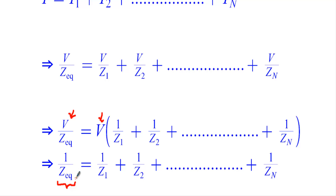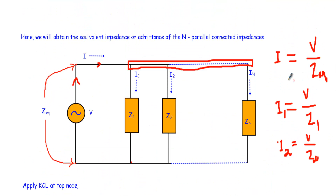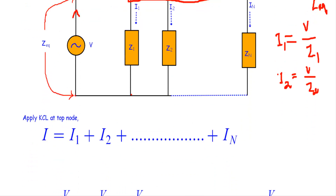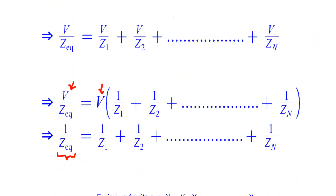Z equivalent is the total impedance of the circuit. This indicates that the reciprocal of the equivalent impedance equals the algebraic sum of the reciprocals of the individual impedances when they are connected in parallel. Using the formula 1 / Z equivalent = 1 / Z1 + 1 / Z2 + ... + 1 / Zn, we can replace multiple parallel impedances with a single equivalent impedance without changing the circuit's voltage and current properties.